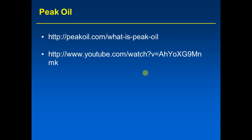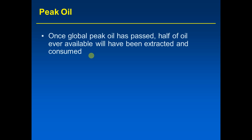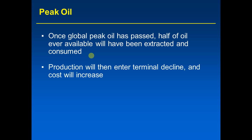Once global peak oil is passed, half the oil ever available — about a trillion barrels — will have been extracted and consumed, leaving a trillion barrels left underground. Production will enter terminal decline and cost will increase. Once production starts declining and world population continues to increase, demand will exceed supply and that will cause prices to go up — basic laws of economics.